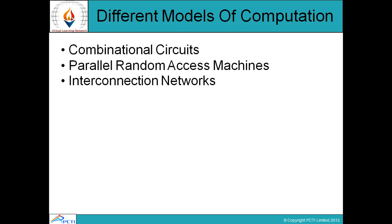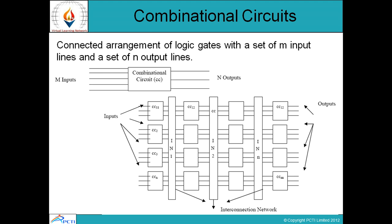Now, different models of computation. We have three kinds of models. First is combinational circuits. Second is parallel random access machines. Third is interconnection networks. A combinational circuit is a connected arrangement of logic gates with a set of M input lines and a set of N output lines.